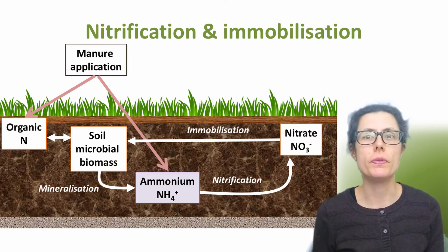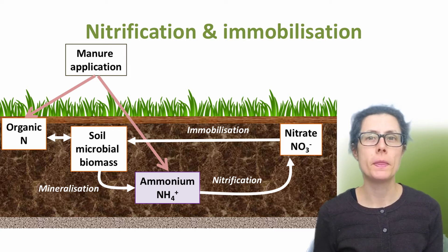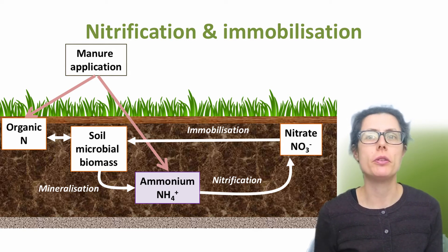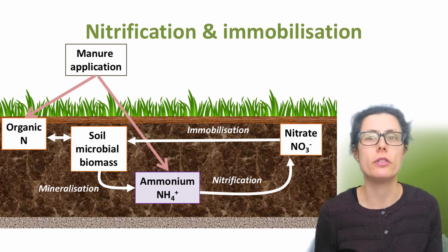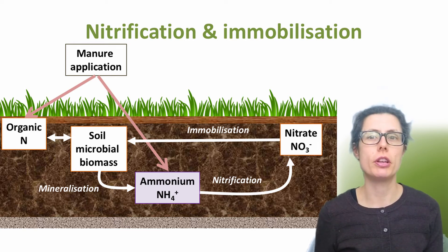Nitrification is the process by which microorganisms convert ammonium to nitrate to obtain energy. This is a very quick process as compared to mineralisation. Immobilisation, on the other hand, is when nitrate and ammonium are taken up by soil organisms and returned back into the soil microbial biomass pool. Therefore the nitrogen becomes unavailable to crops, and this reduces the loss of nitrates by leaching.